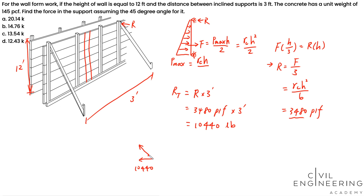And at a 45 degree angle. So this guy will be 10,440 divided by cosine 45 degrees. So this will give you 14,764 pounds, so this is closest to 14.76 Kips.